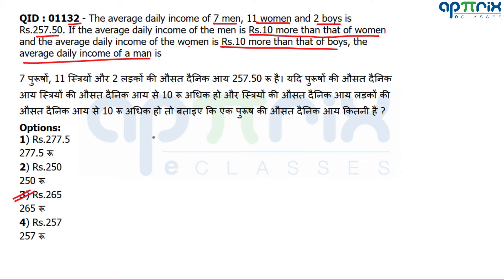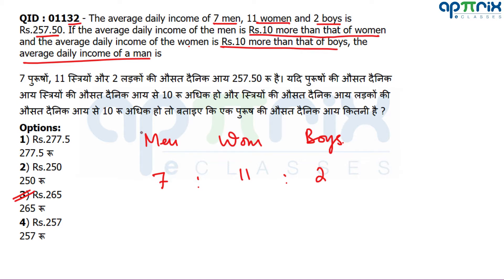There are three quantities given — men, women and boys — in ratio 7:11:2. Everyone has different daily income. The overall average given is 257.50. We need to find one person's average daily income.